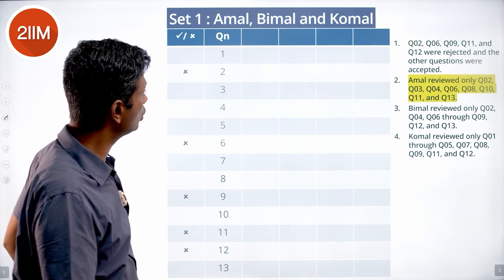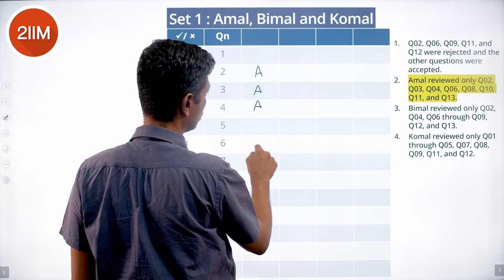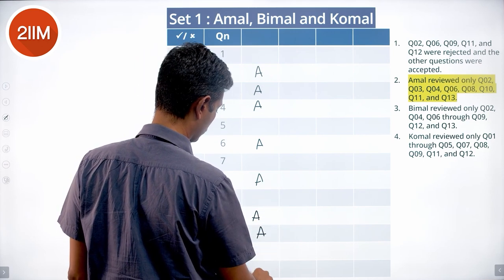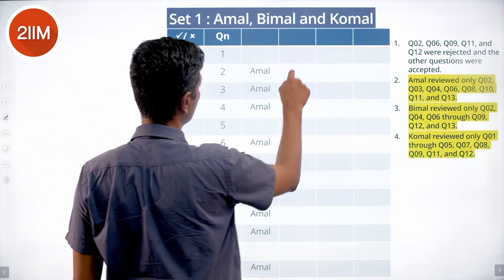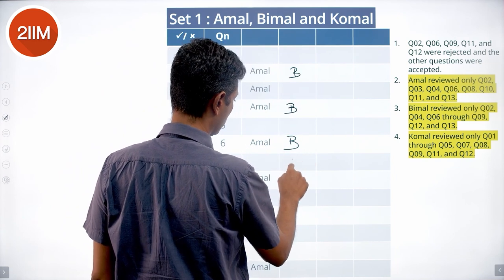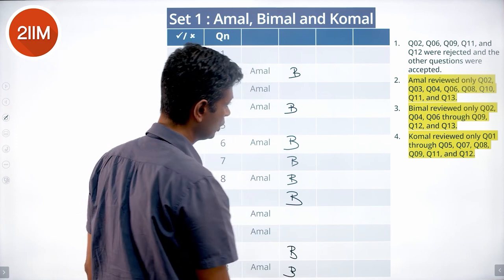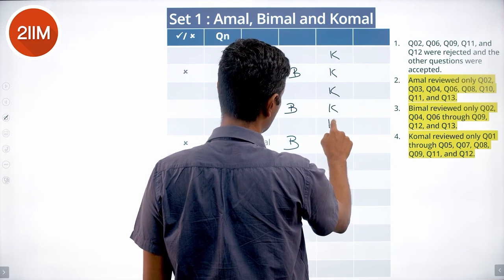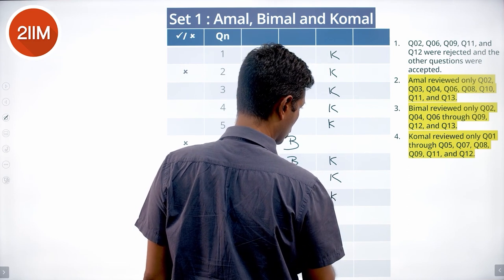Amal reviewed Q2, Q3, Q4, Q6, Q8, Q10, Q11, and Q13. Bimal reviewed Q2, Q4, Q6 through Q9, Q12, and Q13. Komal reviewed Q1 through Q5, Q7, Q8, Q9, Q11, and Q12. We put in who reviewed all of that and filled all the data in.